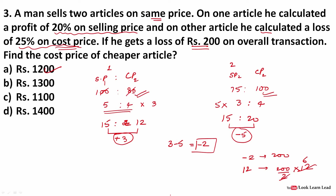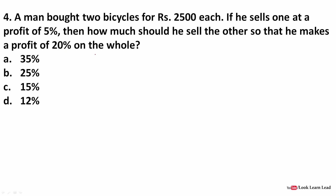Next question: a man bought two bicycles for 2500 rupees each. He sells one at a profit of 5%. How much should he sell the other to make an overall profit of 20%? Total cost price = 5000 rupees. 20% profit on 5000 = 1000, so total selling price needed = 6000 rupees.